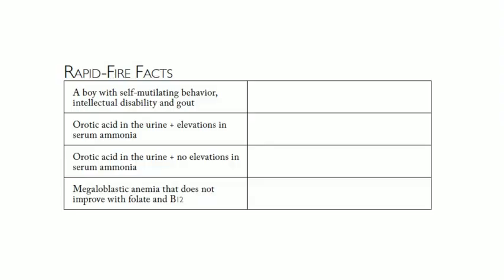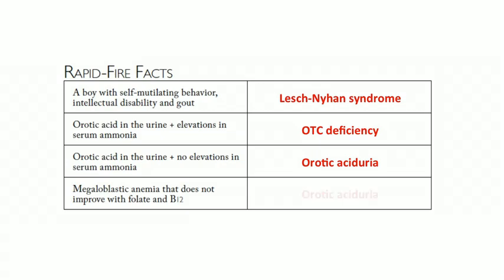Rapid fire facts: A boy with self-mutilating behavior, intellectual disability, and gout — think Lesch-Nyhan syndrome. Orotic acid in the urine plus elevated serum ammonia is a urea cycle disorder like OTC deficiency. Orotic acid in the urine with no elevation in serum ammonia is orotic aciduria. Megaloblastic anemia that does not improve with folate and B12 is also orotic aciduria.